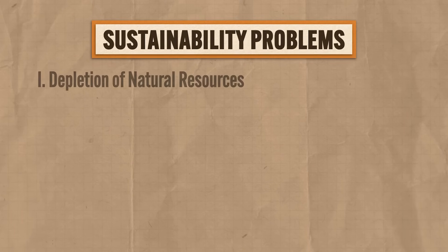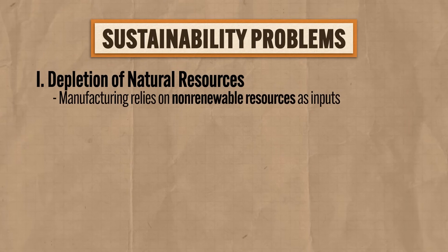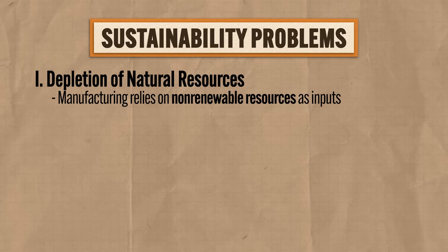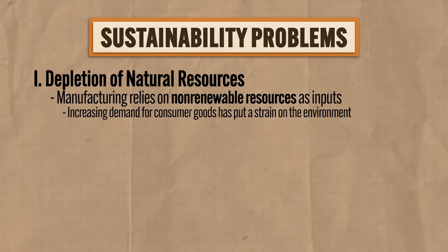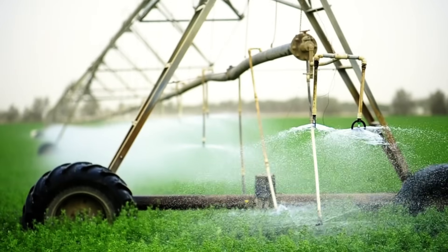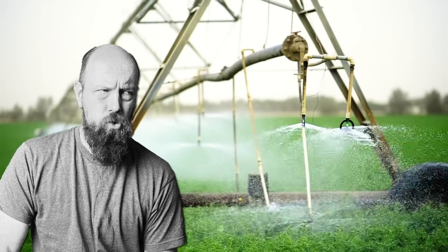Let's start with the main problems created by our global economy. First is the depletion of natural resources. Because most manufacturing relies on non-renewable resources as inputs, the increasing demand for consumer goods has put a strain on the environment. That's kind of the thing about non-renewable resources — you use them up and they ain't coming back. For example, industrial agriculture, while it does feed the growing population of the Earth, requires intensive irrigation which is threatened to deplete freshwater aquifers because the water is being used up faster than it can replenish itself. The world's mouth holes ain't getting less hungry, so that's a problem.